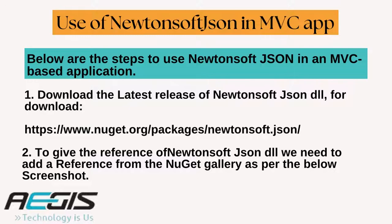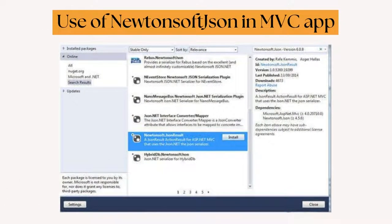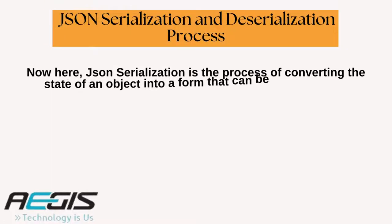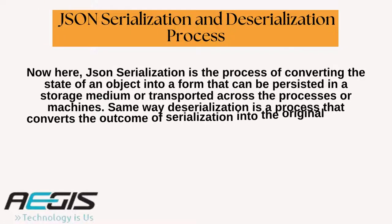First, download the latest release of Newtonsoft.JSON DLL. For download, you can follow the link which I have mentioned here. Second, to give the reference of Newtonsoft.JSON DLL we need to add a reference from the NuGet gallery as per the below screenshot. Next is the JSON serialization and deserialization process.